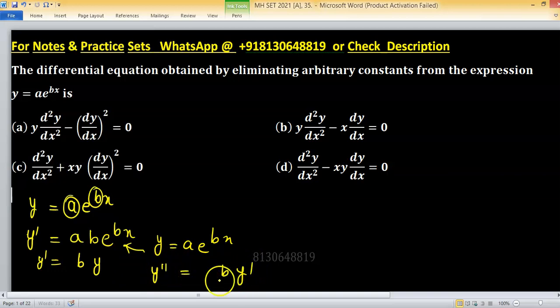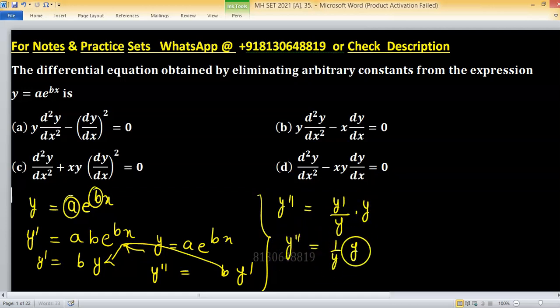Eliminate b from this one, from the previous steps. So y double prime equals y prime upon y times y prime. So y double prime equals one upon y, y prime squared.